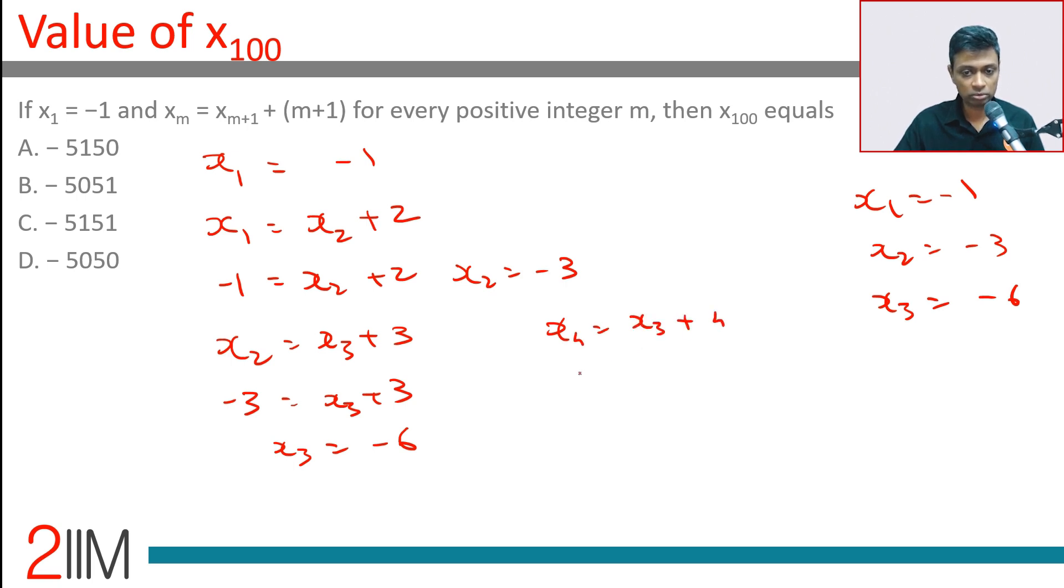x3 = x4 + 4, so -6 = x4 + 4, which gives x4 = -10. Beautiful.